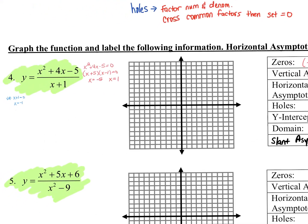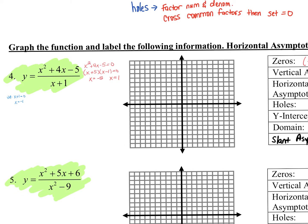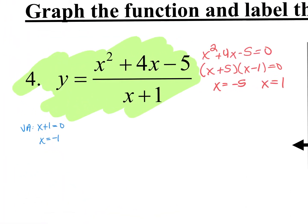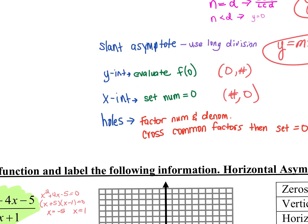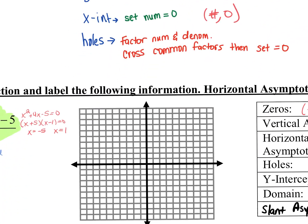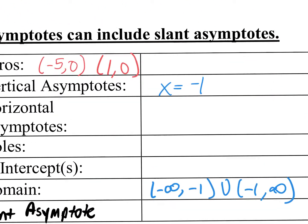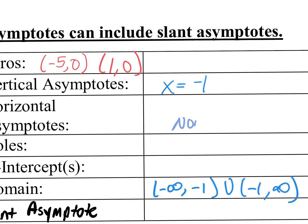Horizontal asymptotes — remind me how we find them. Compare the degree of the numerator to the denominator. It's 2 and 1 — 2 is greater than 1. When the numerator degree is bigger than the denominator degree, there's no horizontal asymptote. So you would say none.